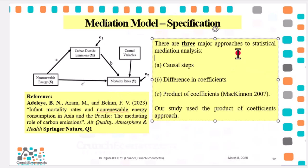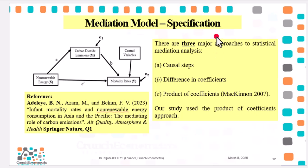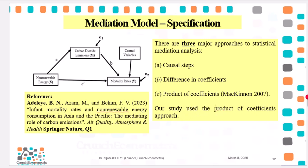There are three major approaches to statistical mediation analysis. Number one: causal steps. Number two: difference in coefficients. Number three: product of coefficients. Our paper uses the product of coefficients approach. For more on that, read MacKinnon 2007. Moving on to how you can specify a mediation model — as you can see, this is a screenshot of the model we specified in our paper.